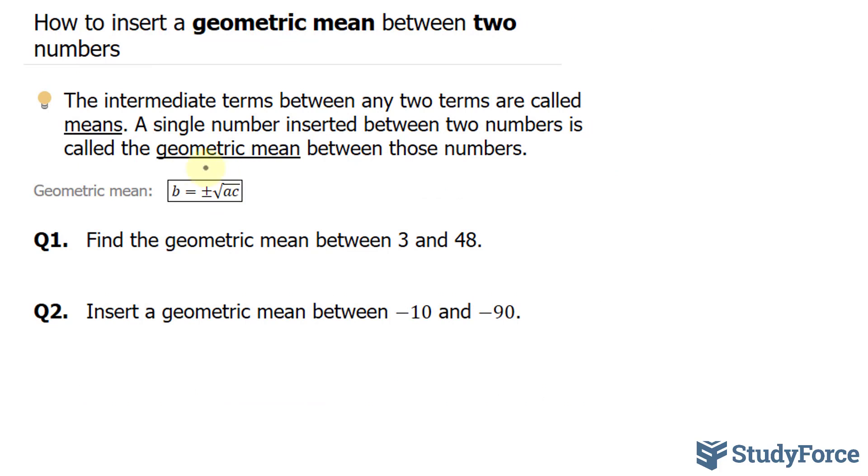To do this, we'll need to analyze this formula where B represents the middle term, A represents the first term, so A is equal to 3, and C represents the last term, which in our case is 48.